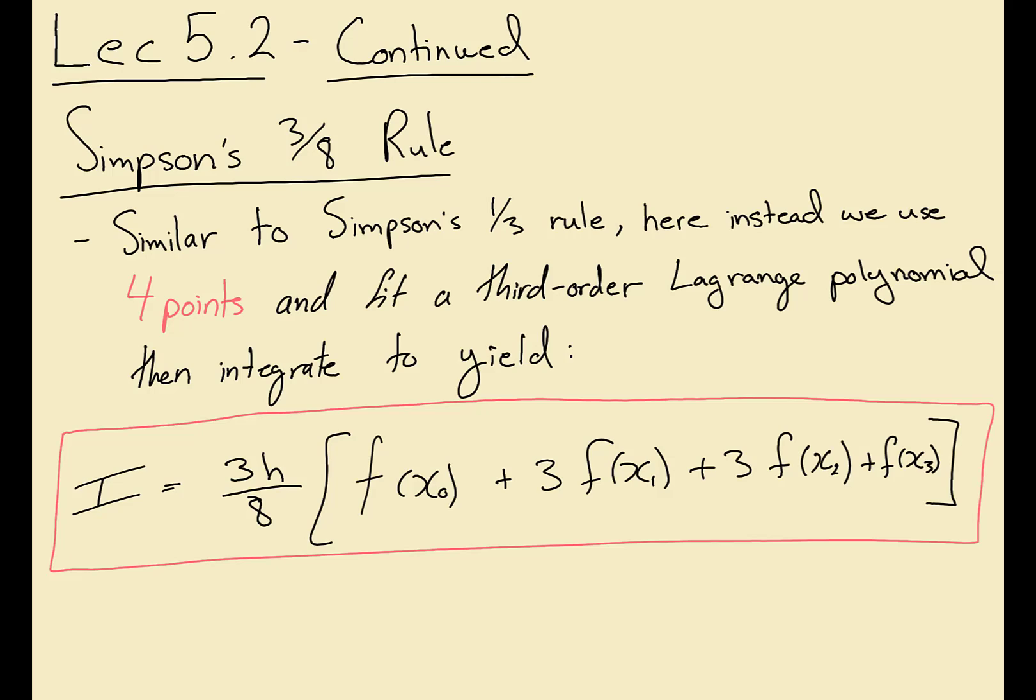For Simpson's three-eighths rule, instead of using three points now we're using four points and we fit a Lagrange polynomial and then we get the following equation where we can see the coefficient here is three over eight, which is Simpson's three-eighths rule. For this course we're only going to cover one application in the lectures for the three-eighths rule, but if you want the multiple applications you can check the textbook.